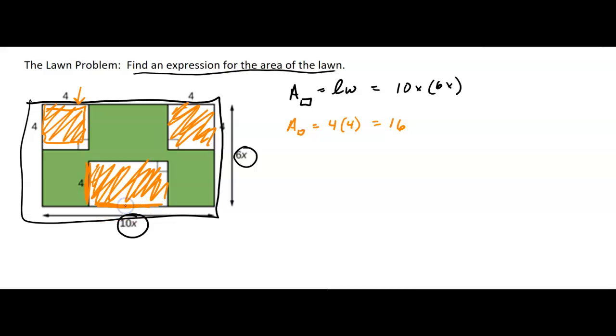It's the whole length, 10x, minus 4 right here because that's 4, that distance is 4, minus another 4 from the other side, or 10x minus 8. So this little rectangle here is going to be 10x minus 8 times that 4. So the area of that rectangle right here is going to be 4 times (10x - 8).